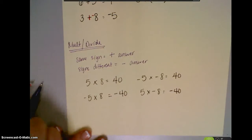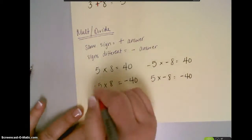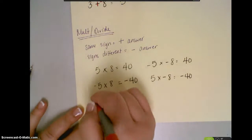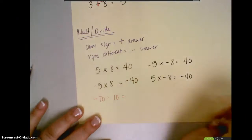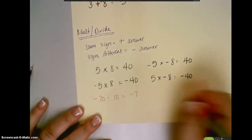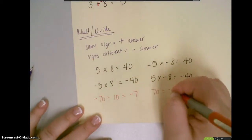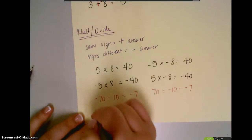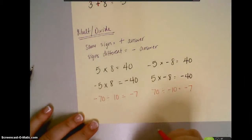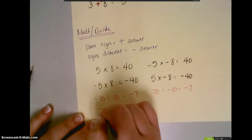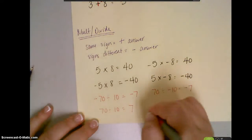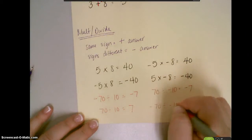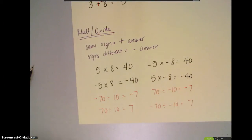And the same is true with division. Negative 70 divided by positive 10 would be negative 7. Positive 70 divided by negative 10 would also be negative 7. Positive 70 divided by positive 10 is a positive 7. And negative 70 divided by negative 10 is also a positive 7. So, those are your rules for integer operations.